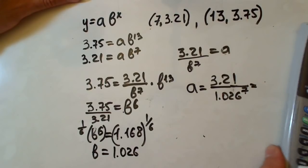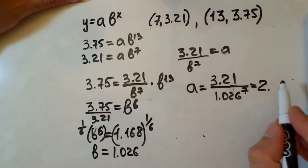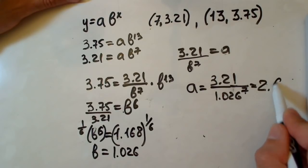We have a equals 3.21 divided by 1.026 to the seventh power. Our a equals, it's not a round number, let's make it three decimals again, 2.682.